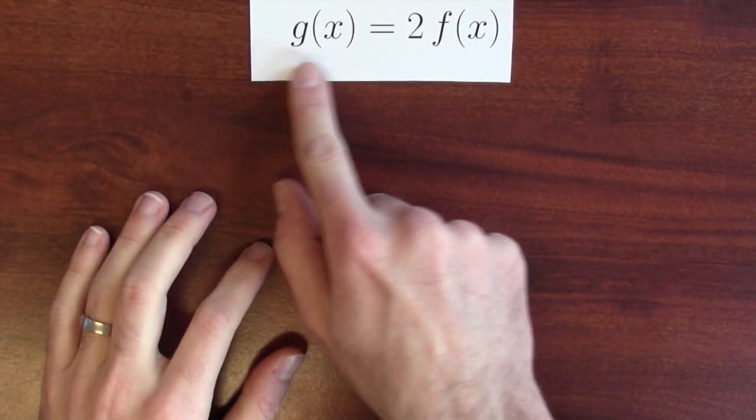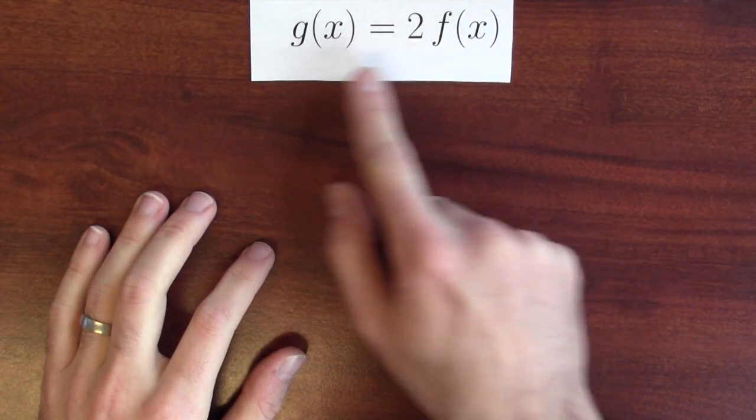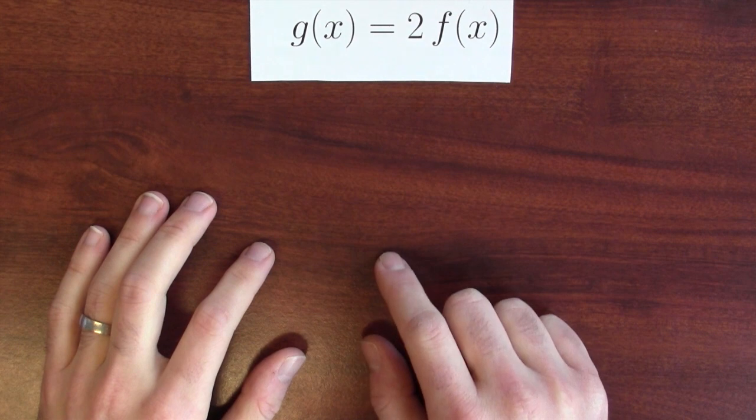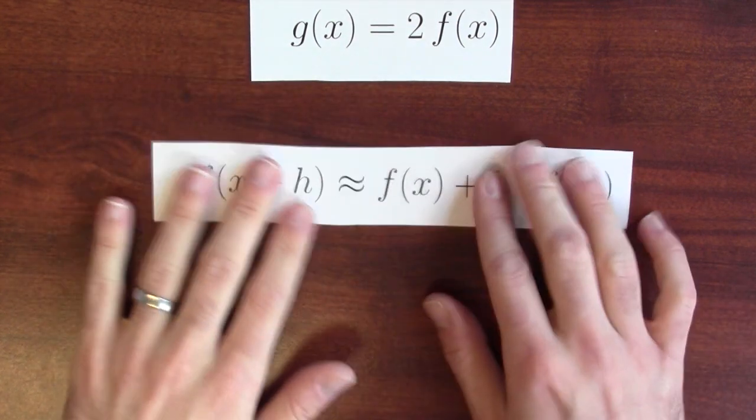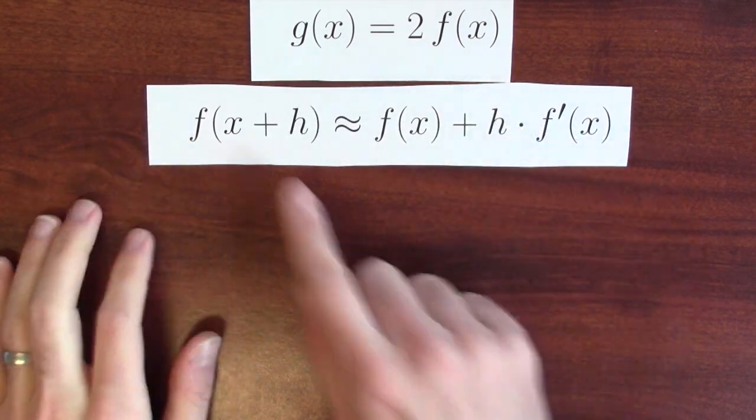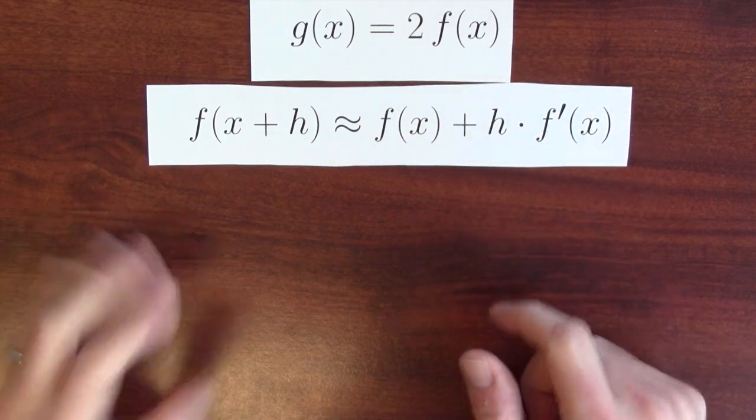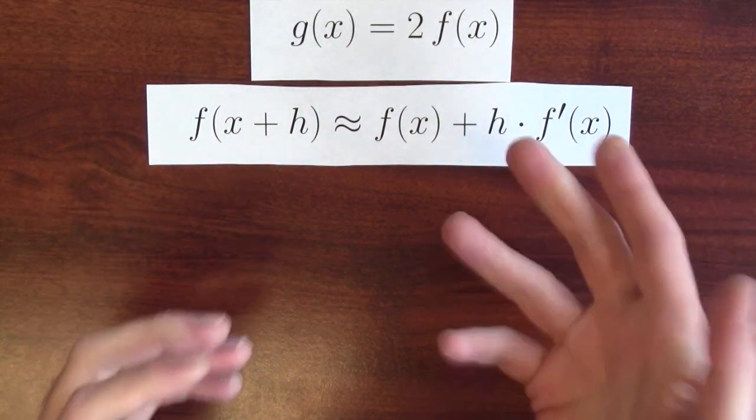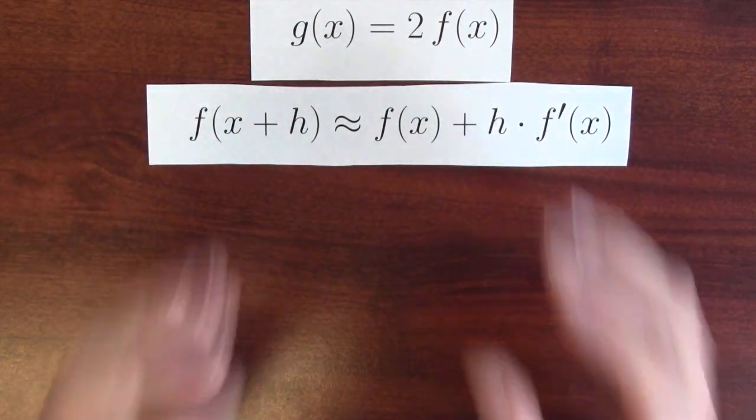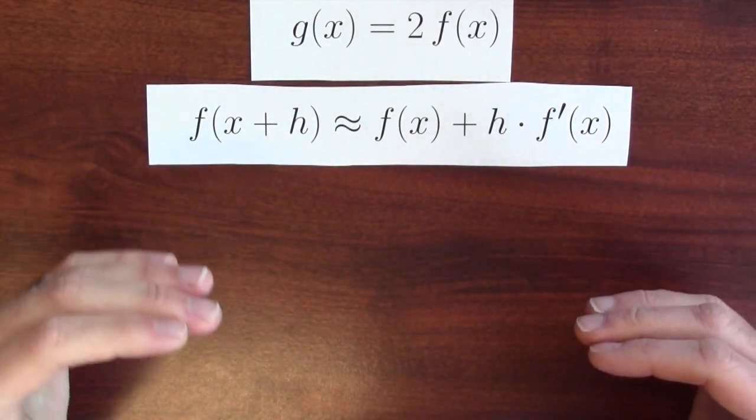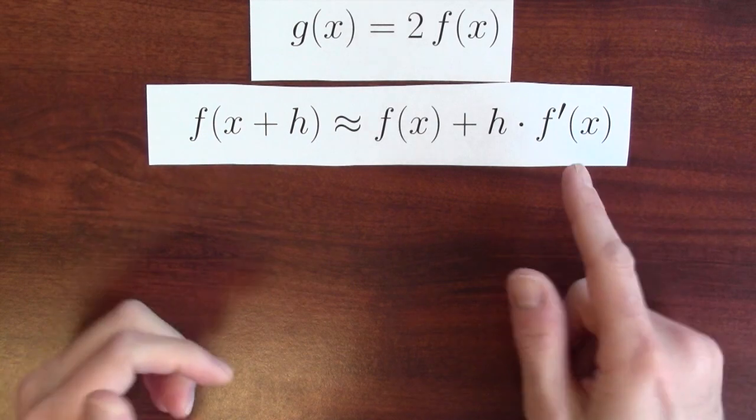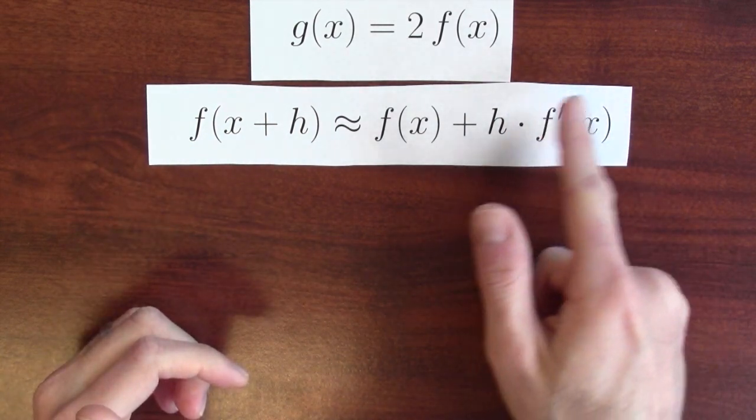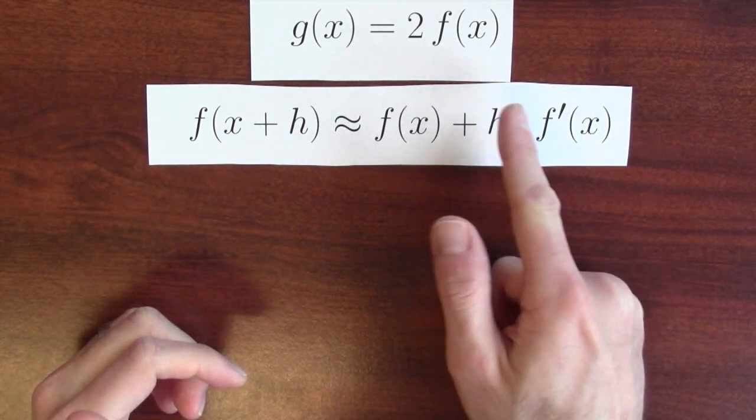Here's what I know. I know that g of x is twice f of x. G is that constant multiple of f. I also know something about the derivative of f. The derivative encodes how input changes become output changes. Or a bit more precisely, the derivative in the limit is the ratio of output change to input change.